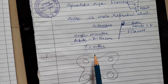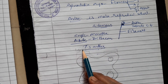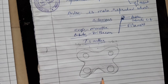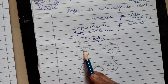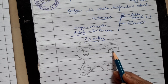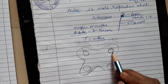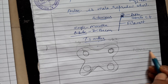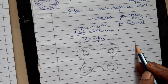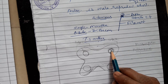The anther shown here is dithecous, with lobe one and lobe two. The anther wall has four layers. The inner portion is called microsporangia when the anther is young. When it grows and the anther becomes mature, this portion is called the pollen sac. The pollen sac is the place where the process of microsporogenesis — that is, the formation of pollen grains — takes place.